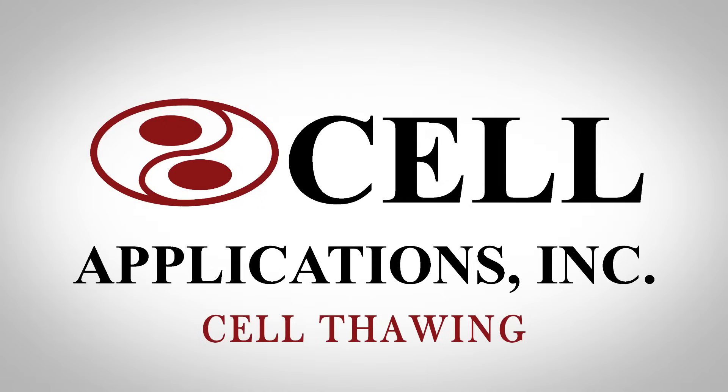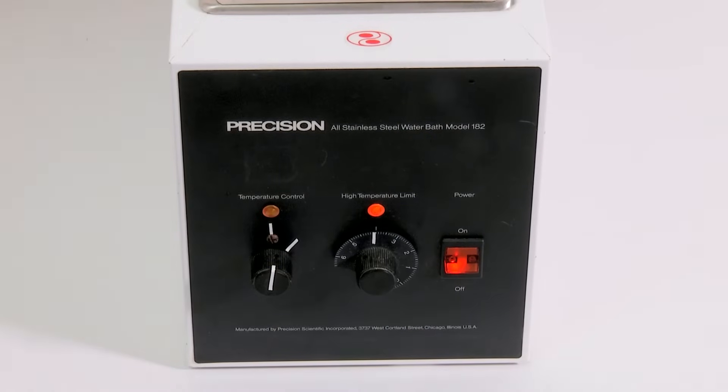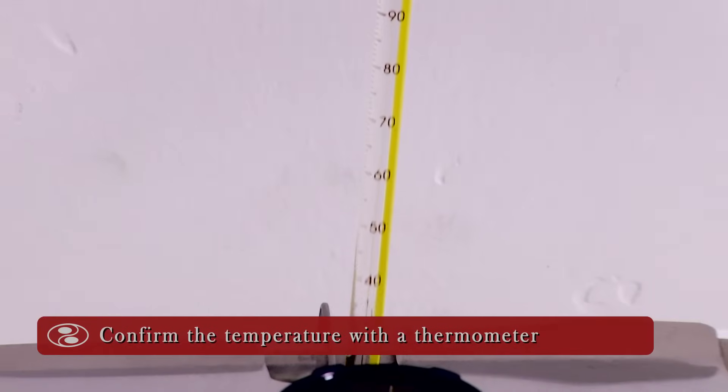Cell thawing. To thaw, set water bath to 37 degrees Celsius. Confirm temperature with thermometer.